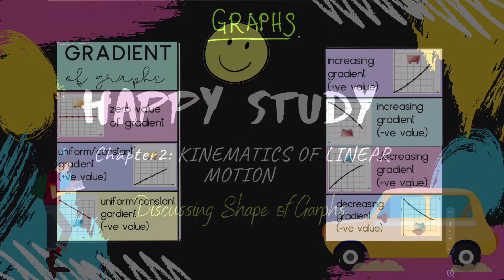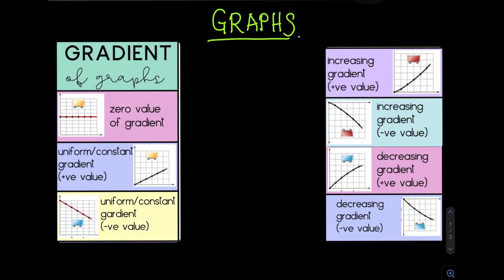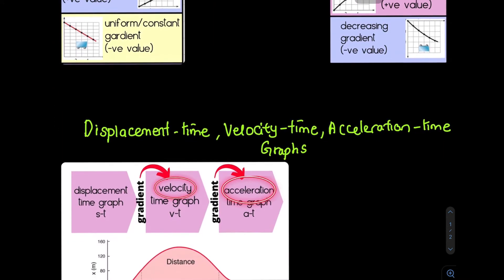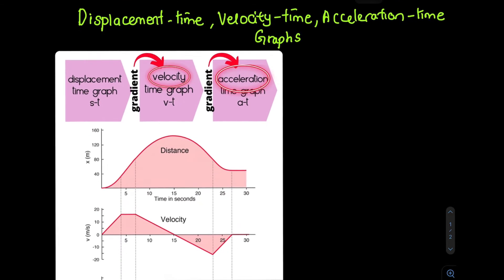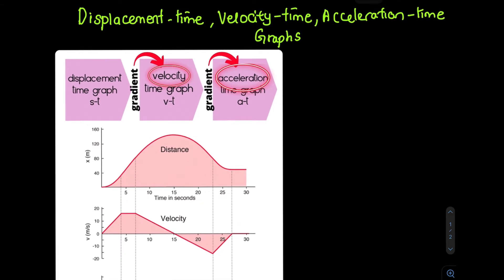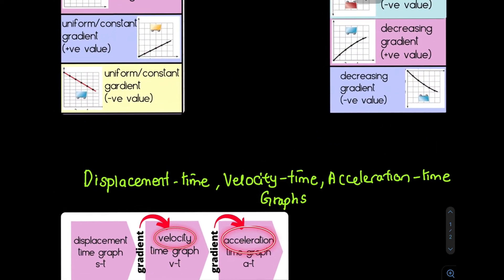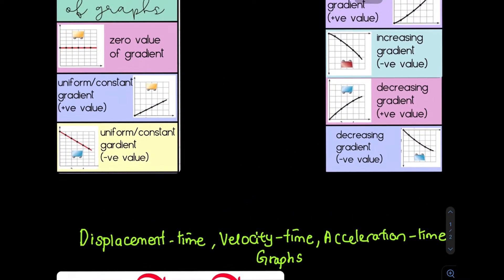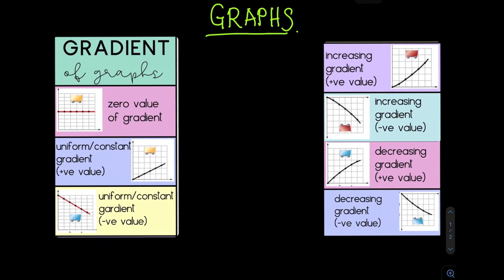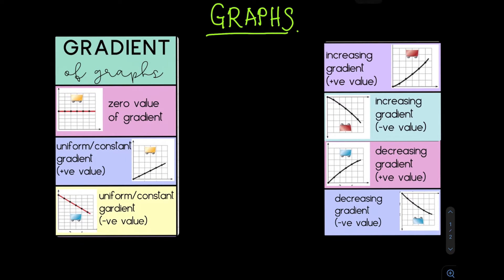In this lesson we are going to be discussing graphs. For this chapter we will be discussing three types of graph: displacement-time, velocity-time, and acceleration-time graphs. We will discuss how to get the displacement, velocity, and acceleration quantities from these three graphs.